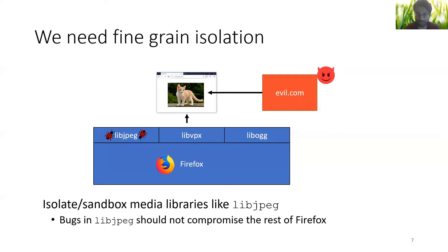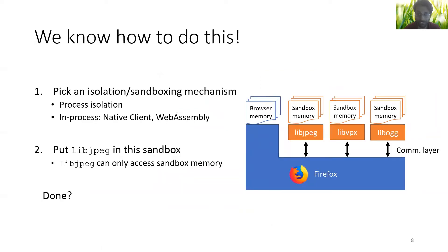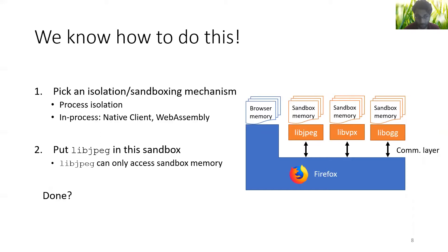To address this problem, we need fine-grain isolation. We need to isolate libjpeg to ensure that a bug in libjpeg cannot be used to compromise the renderer. We already know how to do this: step one, pick an isolation or sandboxing mechanism — for example, a separate process or in-process software-based fault isolation such as Native Client or WebAssembly. Step two, place libjpeg in the sandbox so it can only access sandbox memory. Let's refactor the browser to an architecture where each library has its own isolated memory separate from the rest of the browser. So, are we done?